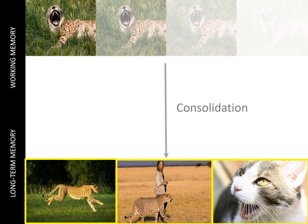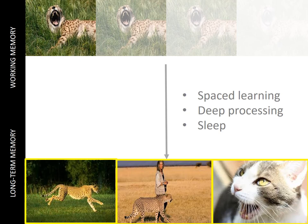Other strategies can also shift information from working memory to long-term memory. First, if you reflect upon a topic on several distinct occasions, consolidation is more likely. Second, if you reflect upon the underlying meaning rather than the superficial features — for example, thinking deeply about why cheetahs might meow — you're more likely to remember it later, compared to merely noting that the phrase sounds like something else. Third, deep sleep enhances the consolidation of facts, whereas REM sleep enhances the consolidation of skills.